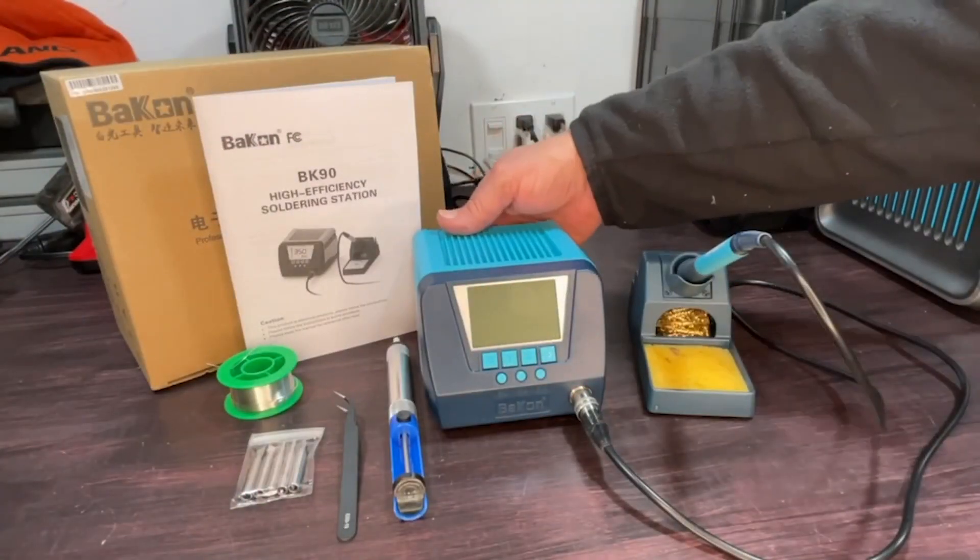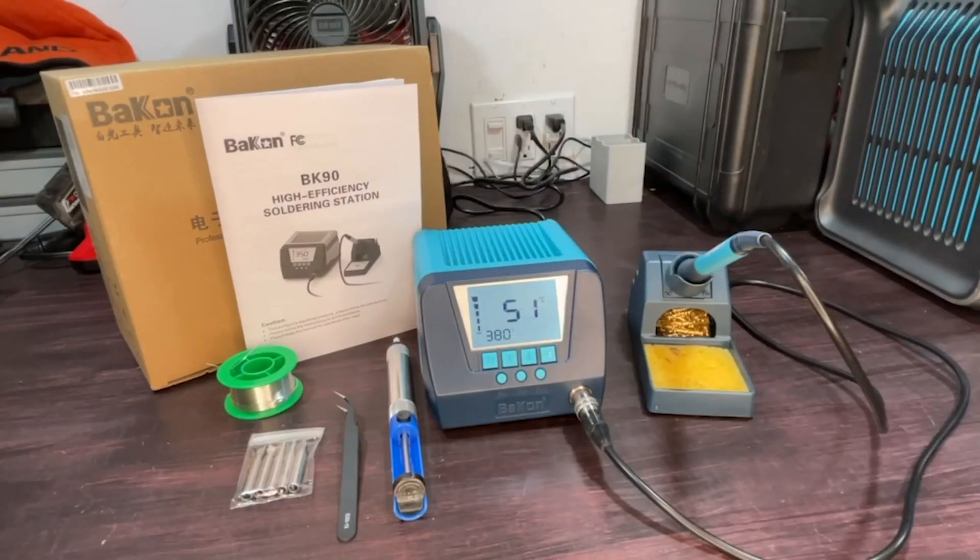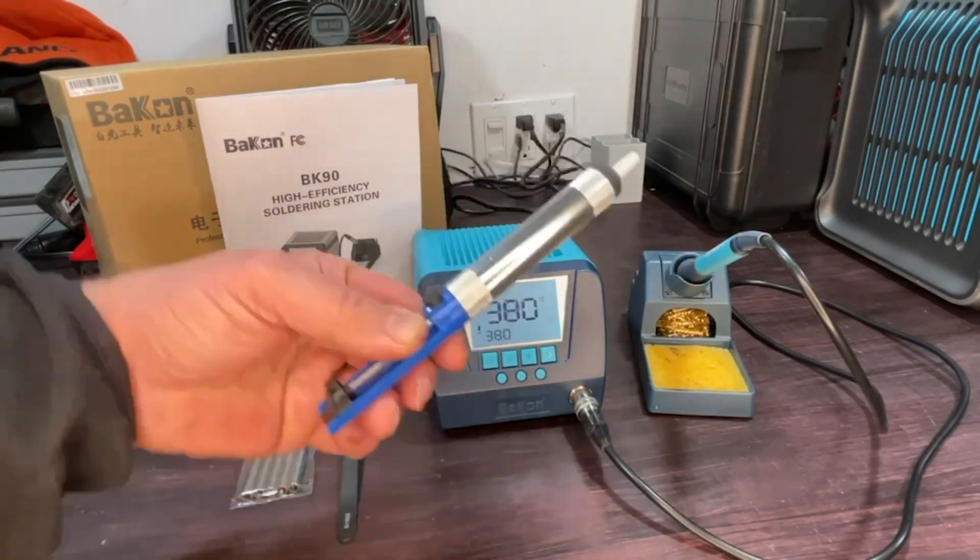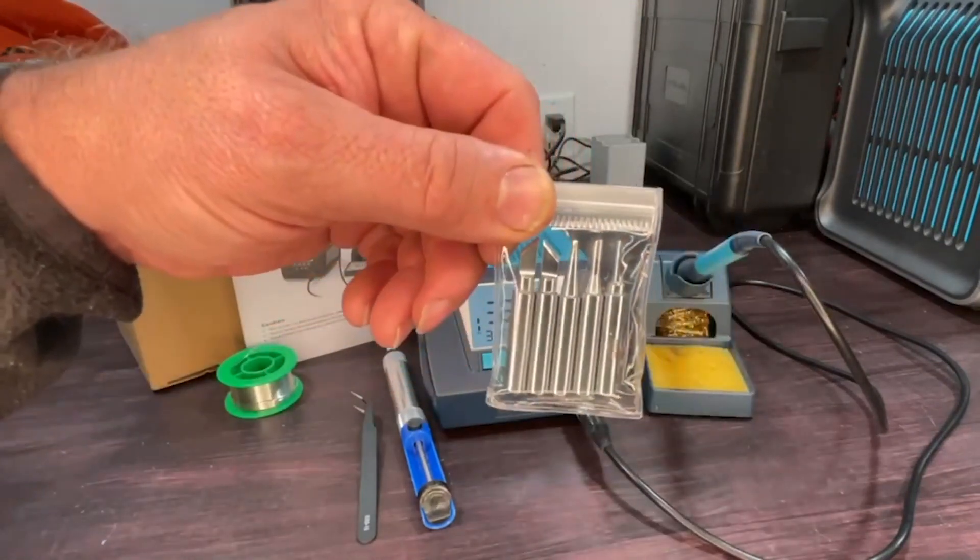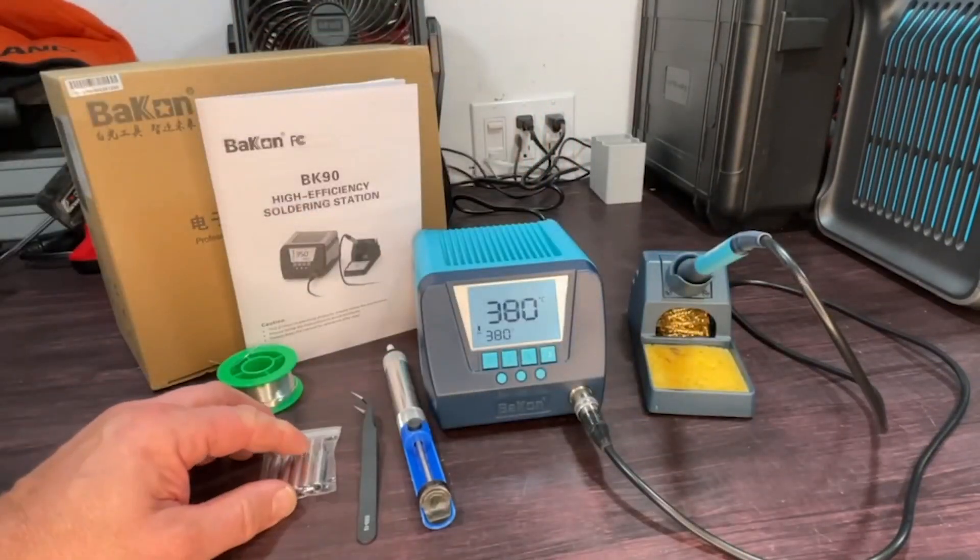This kit comes with everything you need to get started, including a solder sucker, so you can do some repairs if there's mistakes, these nice fine nose tweezers, and of course the interchangeable tips.